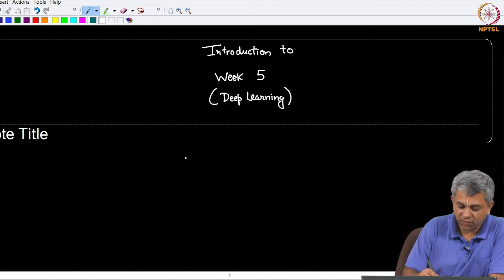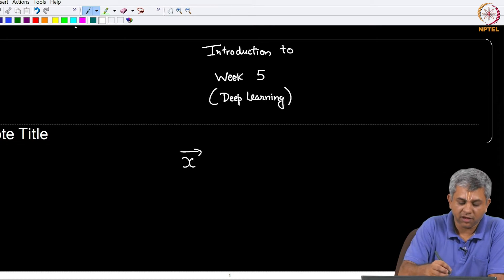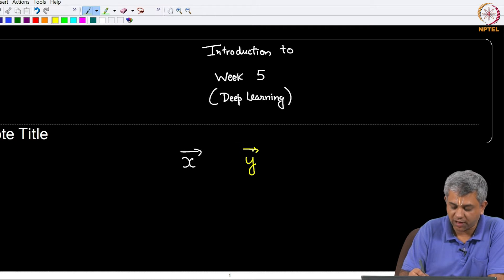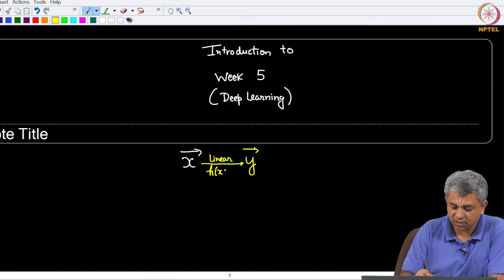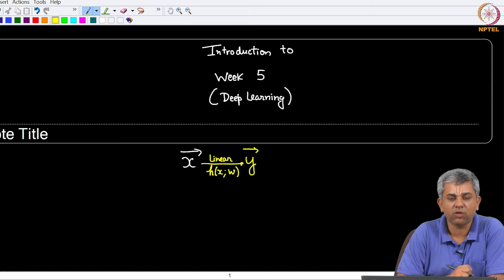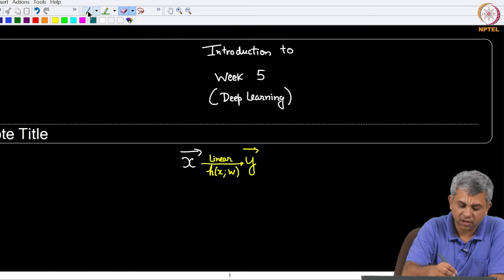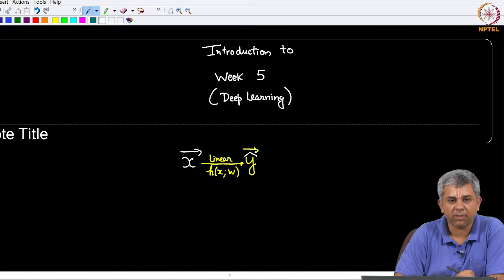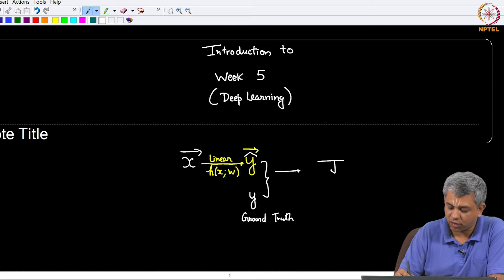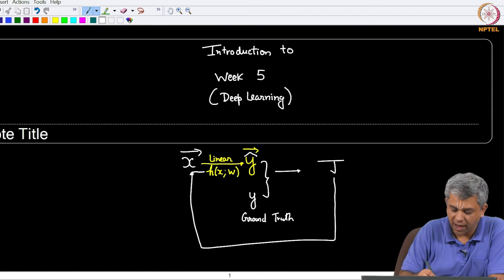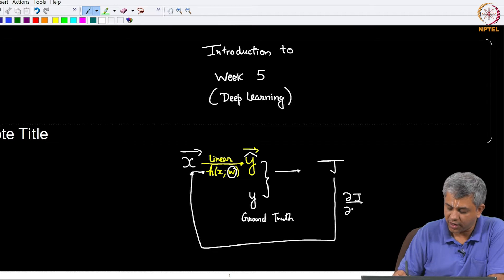So recall that last week we looked at given some input vector x, if you want to connect it to some output vector y via a linear model, why a linear model? For some reason you think that the connection between input and output, the regression connection is actually through a linearity connection. In that case our h of x with parameters w is assumed to be a linear model. You take a hypothesis function h of x, you say that my guess is y hat, you will have already got some ground truth y, and using these two you calculate a cost function j and you feed it back so as to improve w by looking at del j del w.